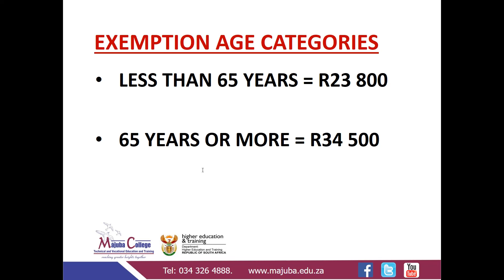Section 10 of the Income Tax Act clearly makes a distinction between two age categories for the exemption. One exemption relates to taxpayers that are less than 65 years, and the exemption is R23,800. The other age category refers to taxpayers that are 65 years or more, and they are granted an exemption of R34,500. So essentially, when dealing with this exemption, you first need to determine whether the interest was included in gross income, and then determine whether the taxpayer is less than 65 or 65 years or more, so you can apply the appropriate limit.